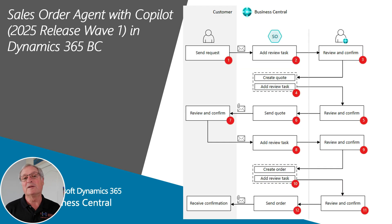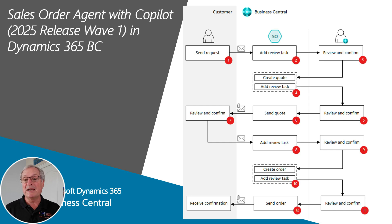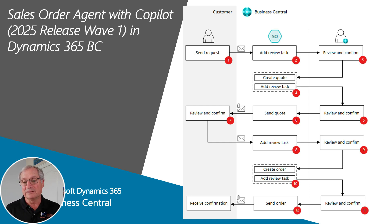This is the basic workflow that comes with the sales order agent. You can make some changes in the configuration, but this is a basic setup. It starts with a request from a customer to the company asking for some information. The company will review it and process it through the sales order agent. The agent will send a quote or follow-up email back to the customer. The customer can review, confirm, and send back what they'd like to do. We'll end up with a sales order and a confirmation to the customer.